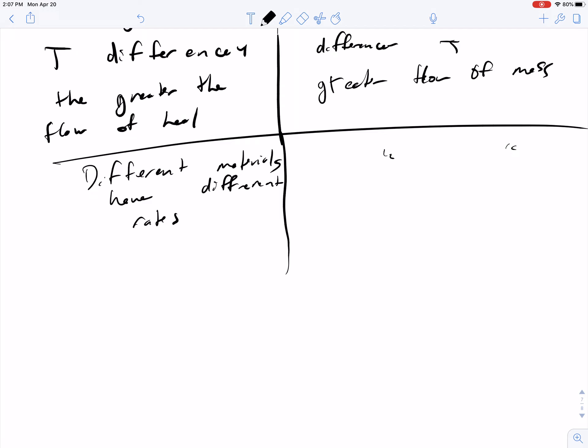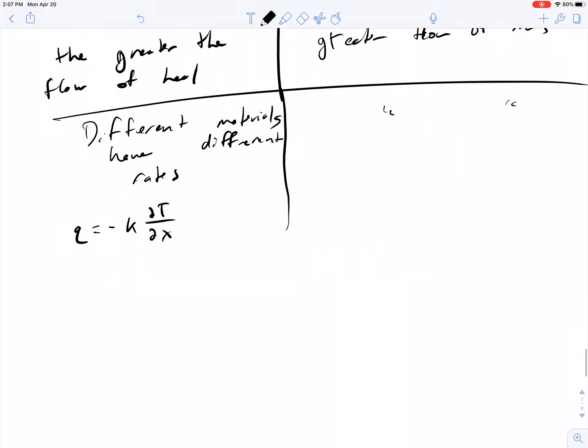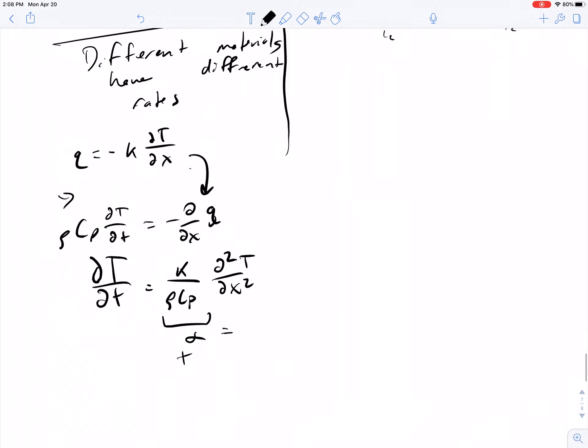Fourier developed Fourier's law of conduction: the flow of heat energy equals minus thermal conductivity times the derivative of temperature with respect to x, where k is the thermal conductivity. When you have rho heat capacity del temperature del time equals minus del by del x of j, you make the substitution and end up with del temperature del time equals k over rho cp del squared temperature over del x squared. We define this term as alpha, the thermal diffusivity.